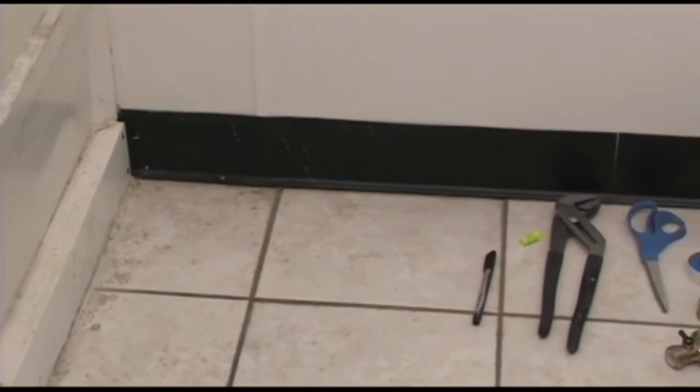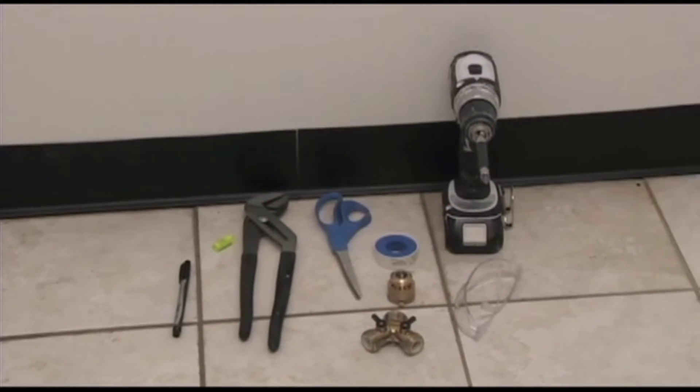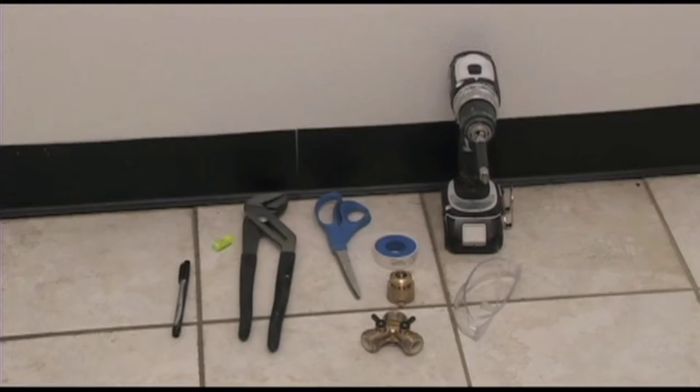Once an appropriate spot is located, gather your tools. The tools needed for installation are a wrench, Teflon plumber's tape, a bubble level, an electric drill, a drill bit, and a Phillips-style screw head.